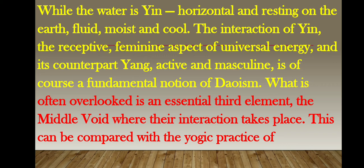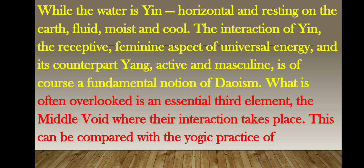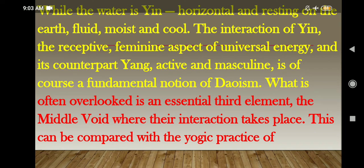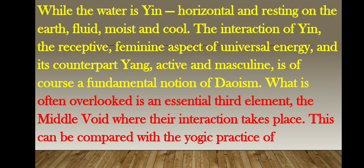What is often overlooked or ignored is an essential — most necessary — third element. We discussed two elements, but most important is the third element. What is often overlooked is an essential third element: the middle void. The void means vacuum — a space devoid of matter — where the interaction of Yin and Yang takes place.